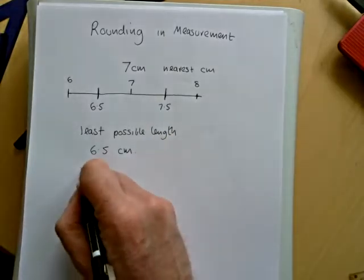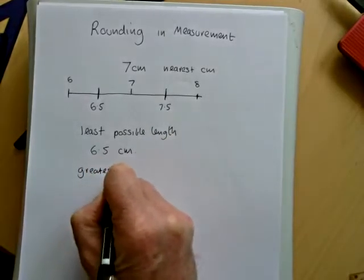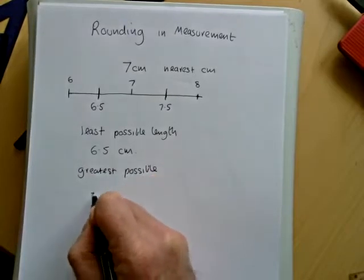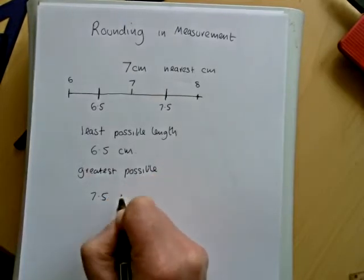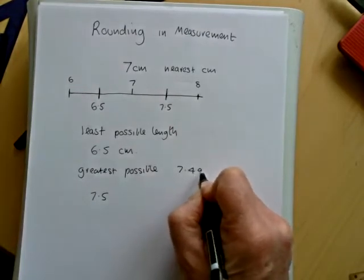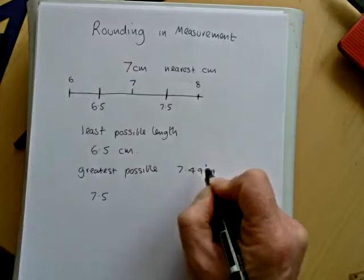What is the greatest possible length? Now, some people don't like writing 7.5, because they say that rounds up to 8. Some people put in 7.49999, recurring.